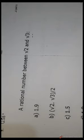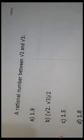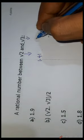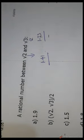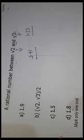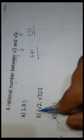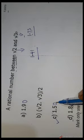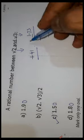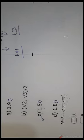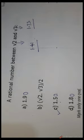Question number 58: find a rational number between √2 and √3. The value of √2 is 1.41 and √3 is 1.73. Between these, 1.5 lies in between. So 1.5 is the correct answer, and C is the correct option.